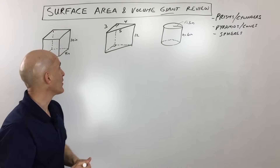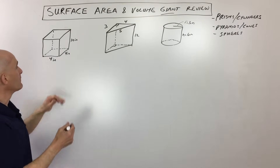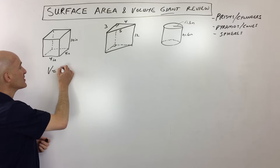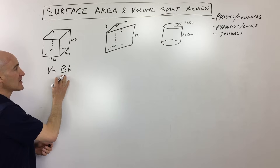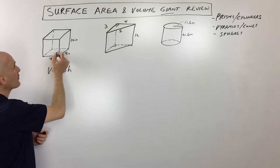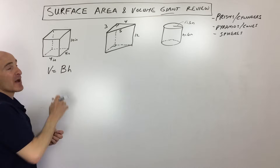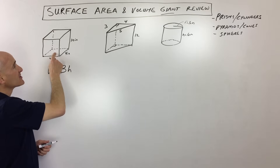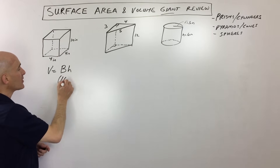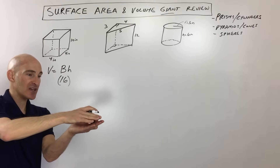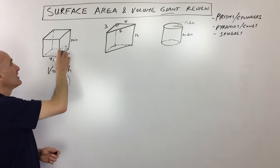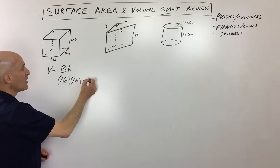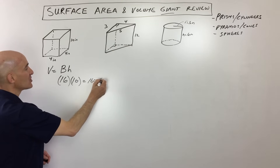We're going to do the surface area and the volume. For volume, the general formula is easy to remember: it's the area of the base times the height — capital B for area of the base. So you find the area of the bottom and multiply it by the height. In this case, it's like taking the area of this square, which is 16 inches squared, stacking them up 10 inches high. So 16 times 10 gives us 160 inches cubed.